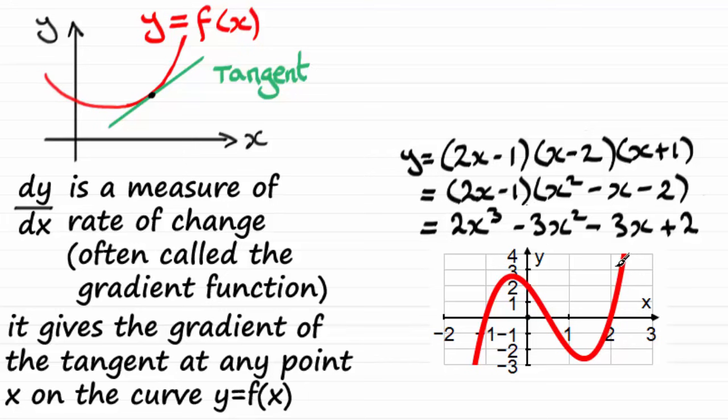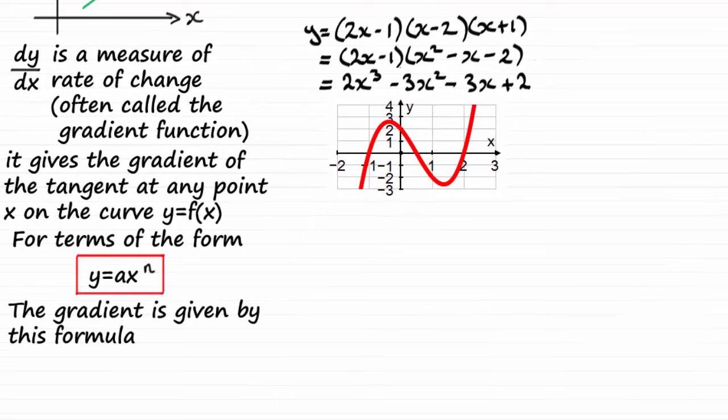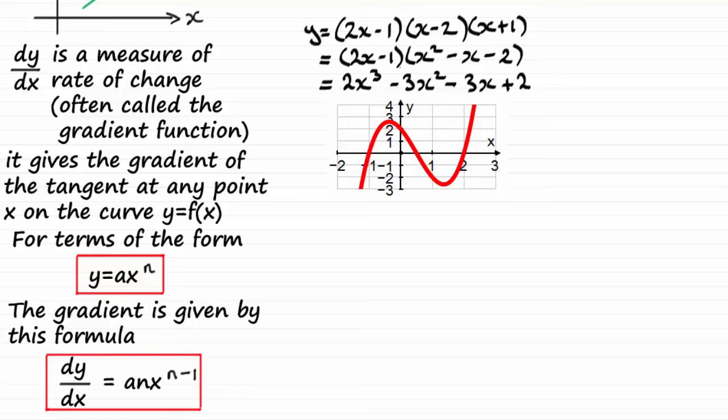Now when we get equations of curves which have terms like the ones that you see here, we say that those terms are of the form ax to the power n. So if you have terms of that form in an equation, the gradient is given by this formula dy by dx which is equal to a times the power n times x to that power reduced by 1, n minus 1.